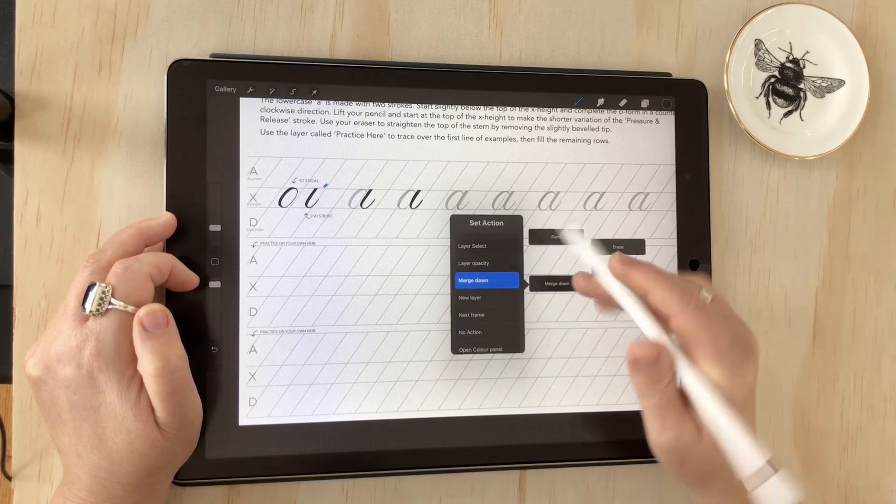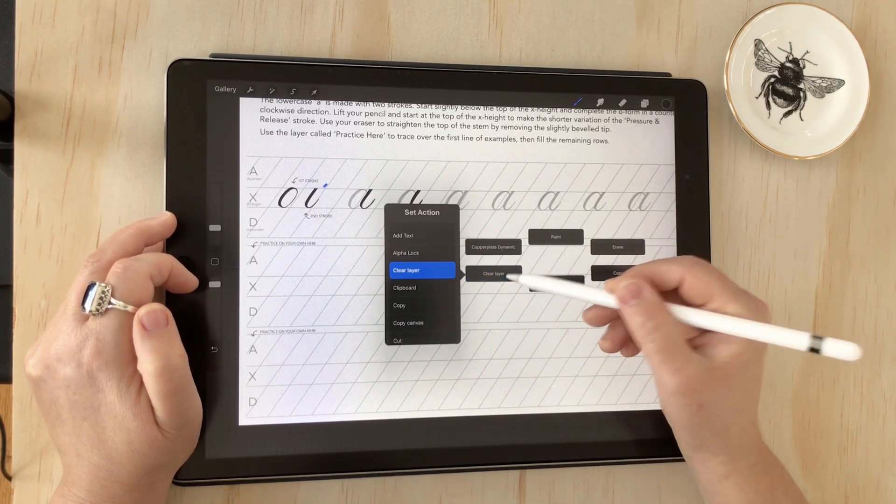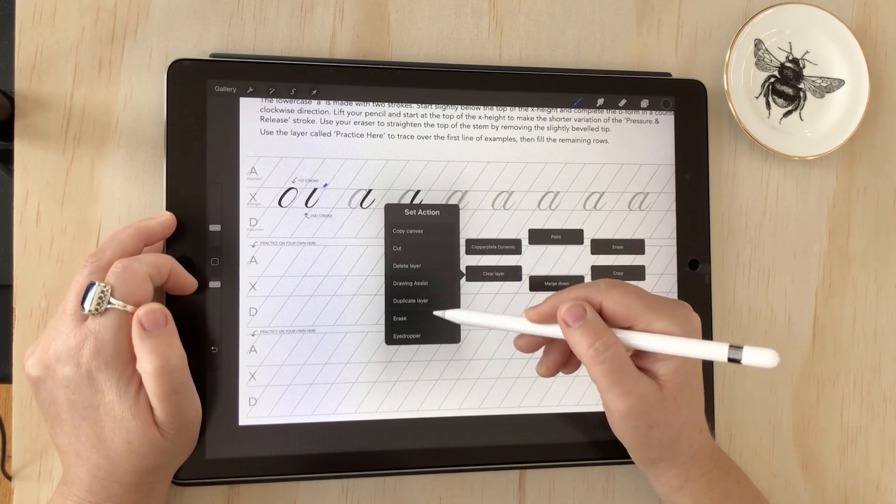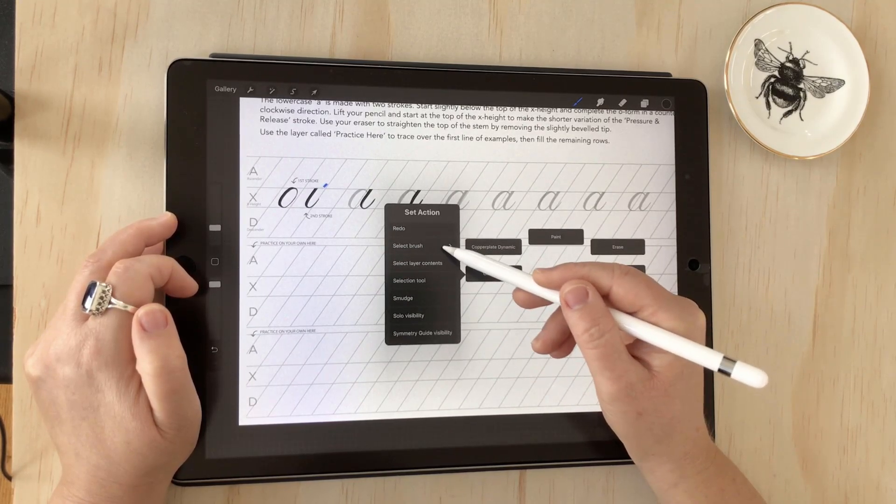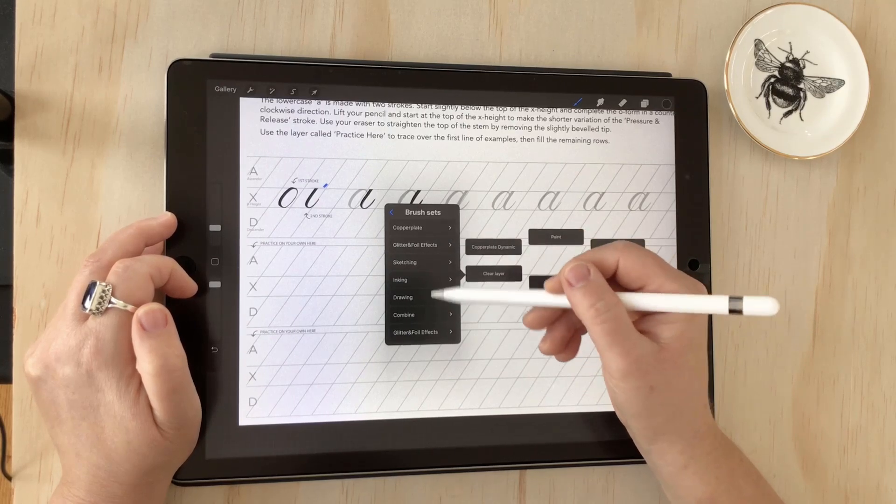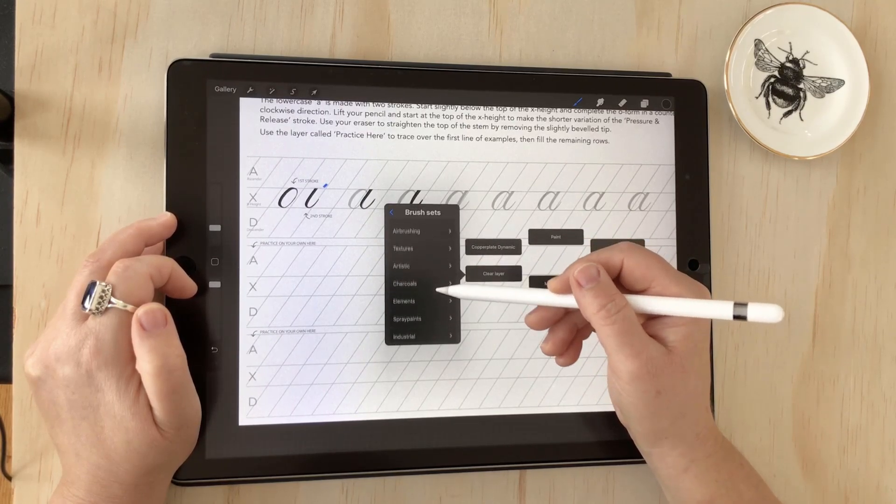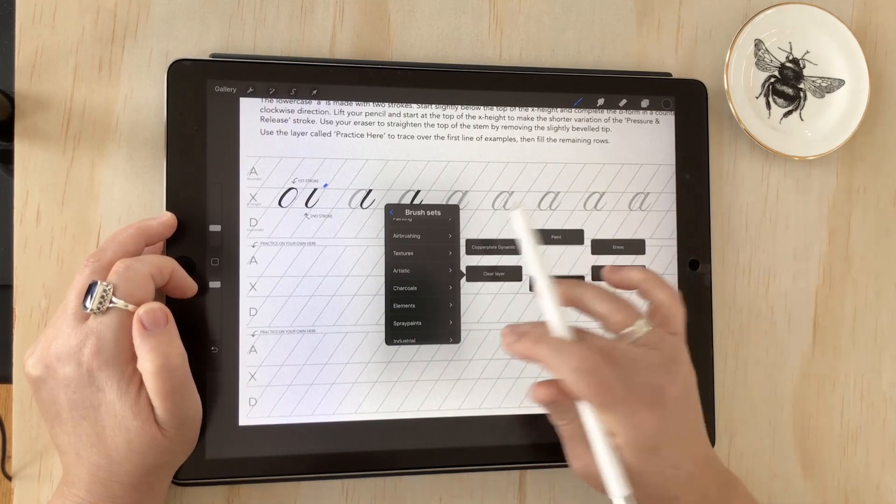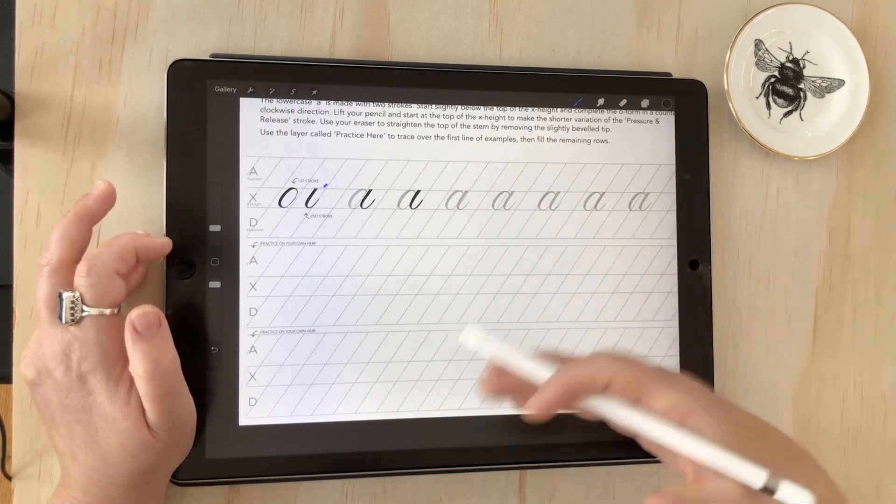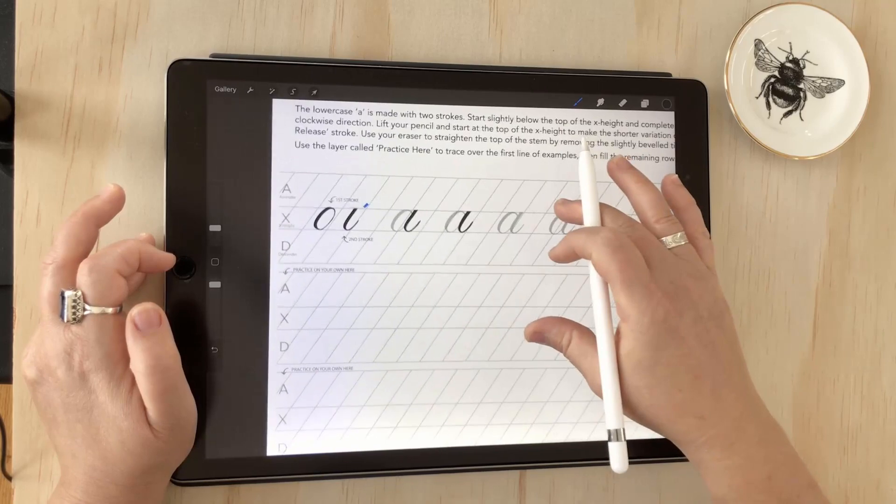So you can set those to whatever you like and you can even go as far as choosing individual brushes. So if I open this menu I can just scroll down to select brush and then I've got access to all my brush sets, so I can even put my favorite brush into some of these menus so then I can just move between the brushes really easily.